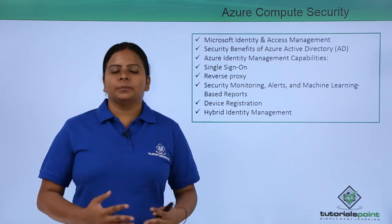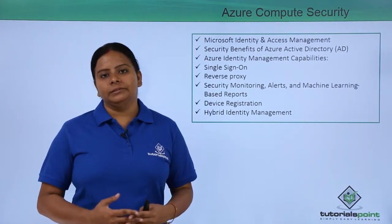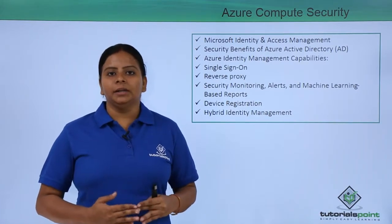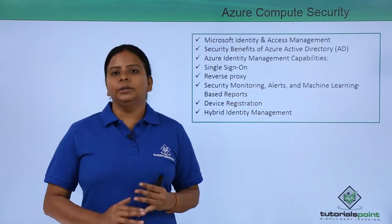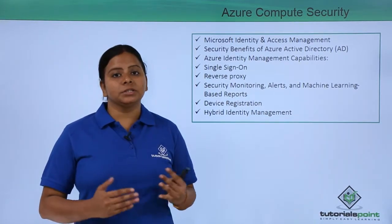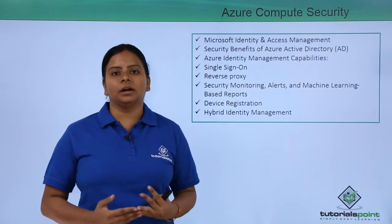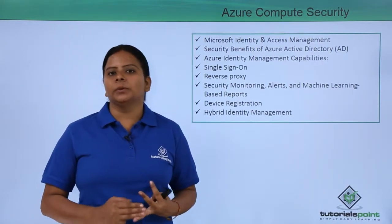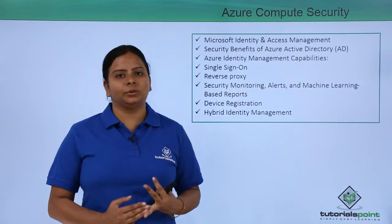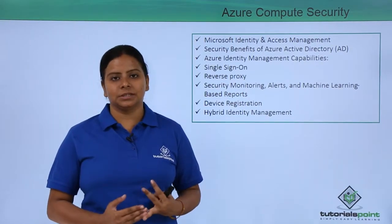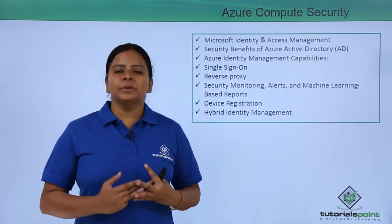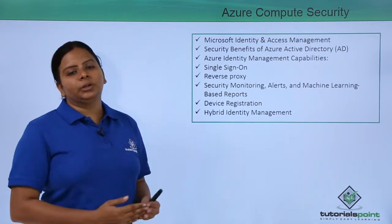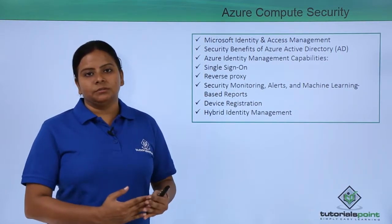So this is the mix of security we generally have. When talking about compute security, we need to include network security because your systems are connected via the network. You also need to provide identity protections because users are going to access your compute services. It is a mixture of security required to secure your infrastructure and compute services.